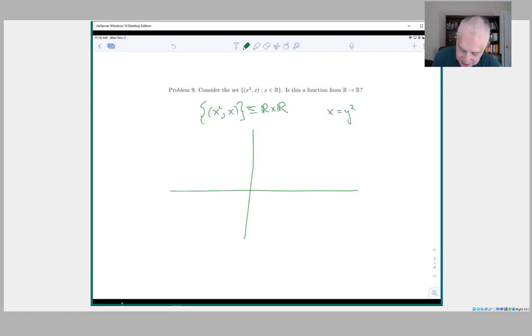In other words, it's a parabola drawn on its side, where for each x, for each y, the corresponding x is y squared. And you can see from this picture that it is not a function because you can have multiple elements from the first coordinate, multiple elements from the domain, giving the same value in the codomain.